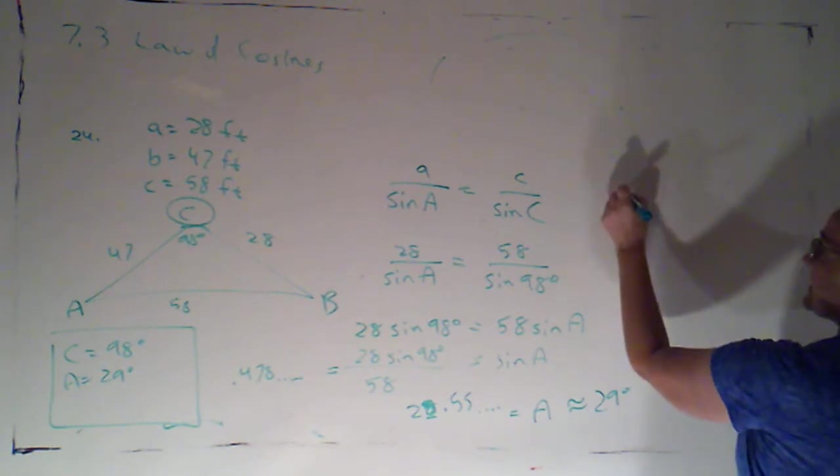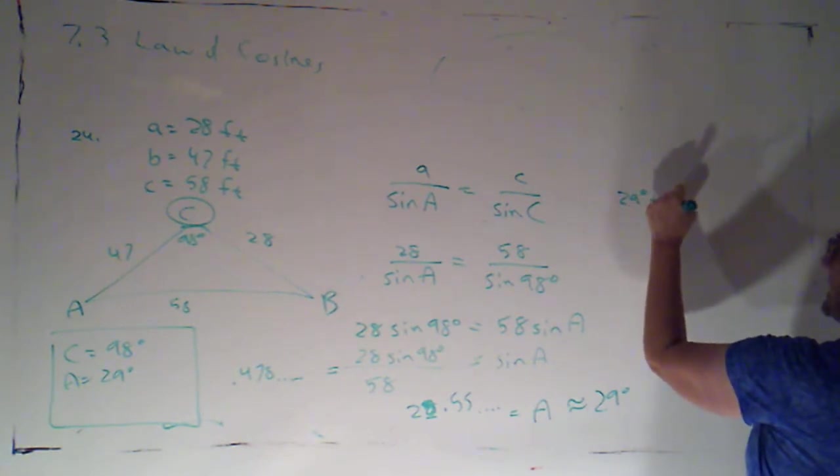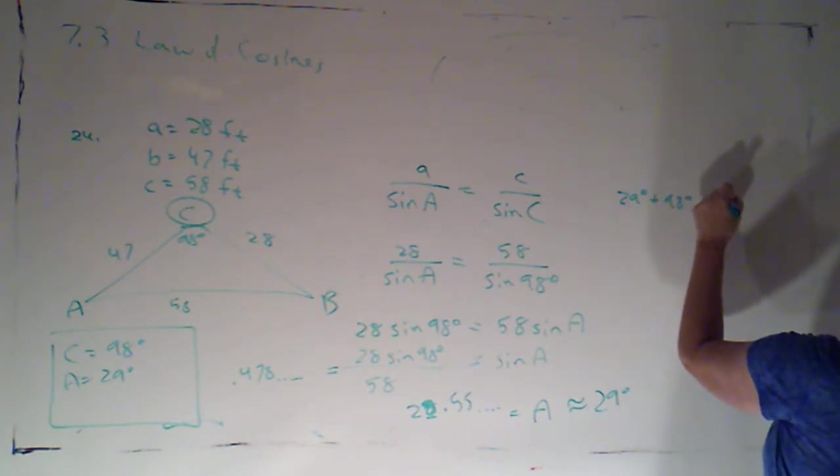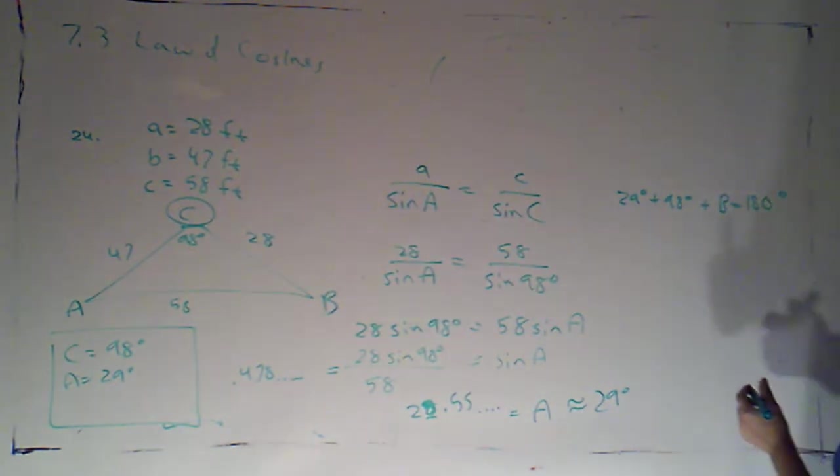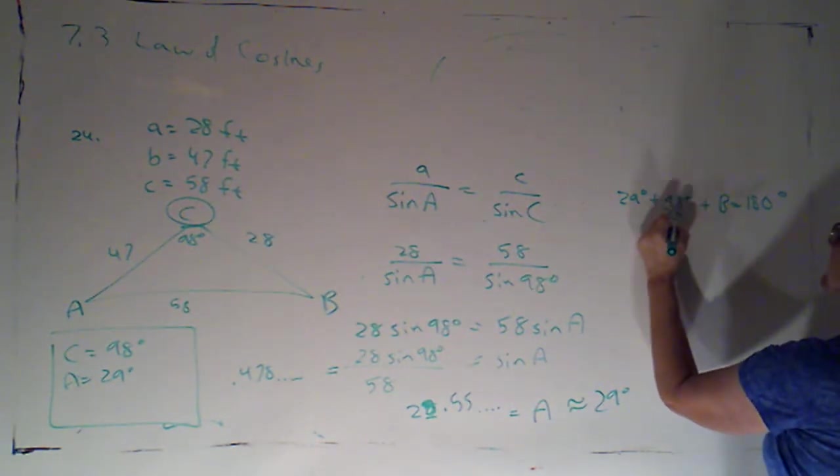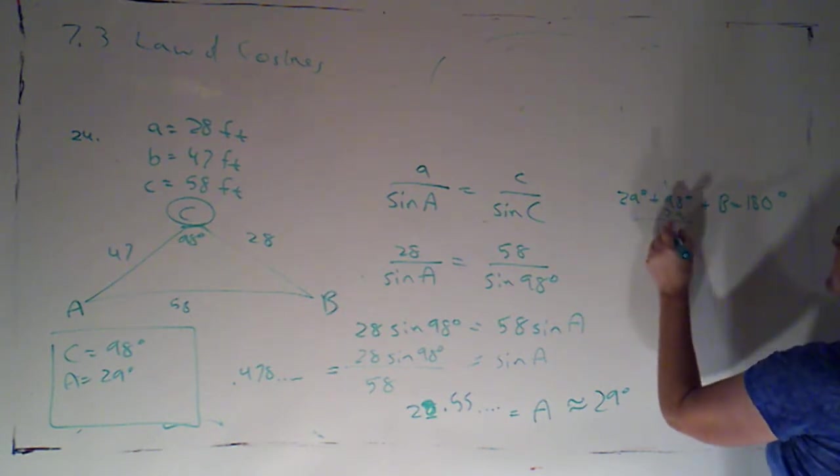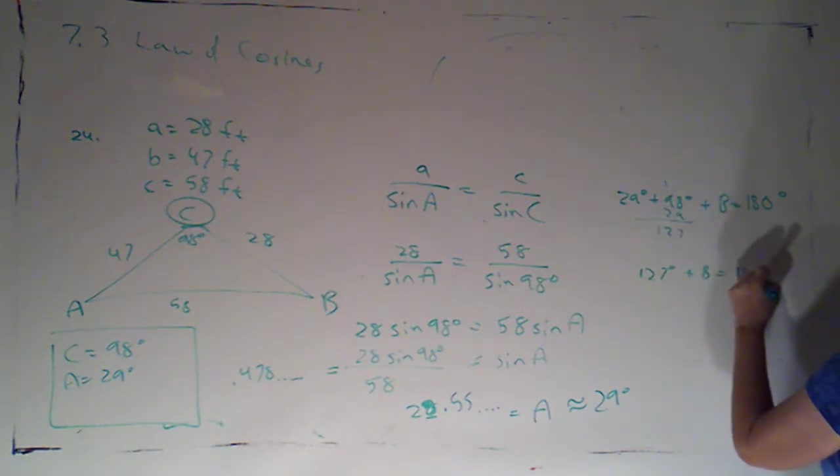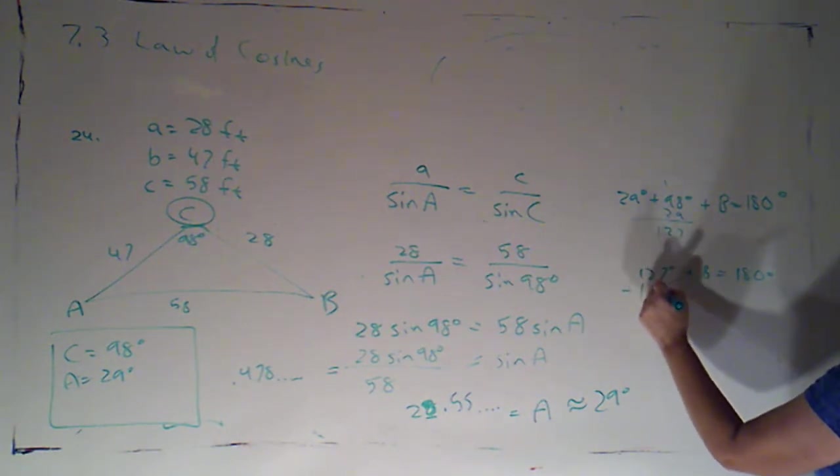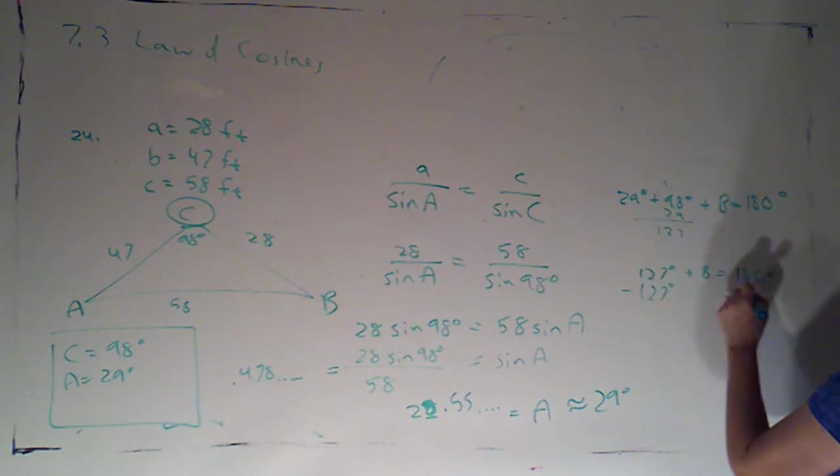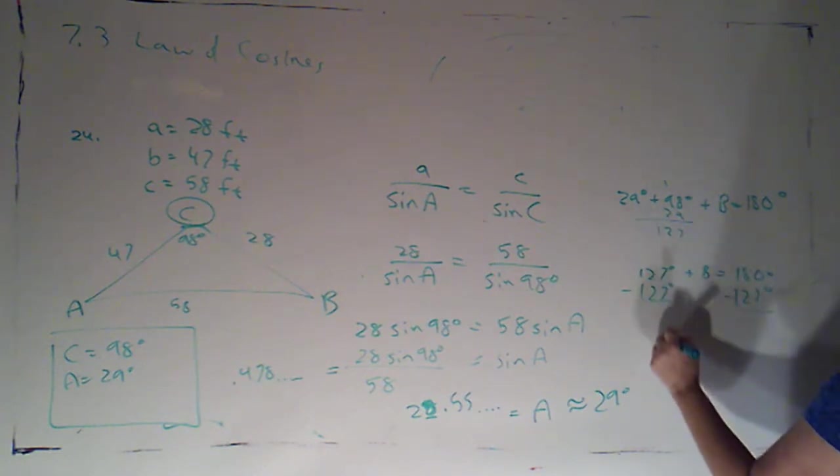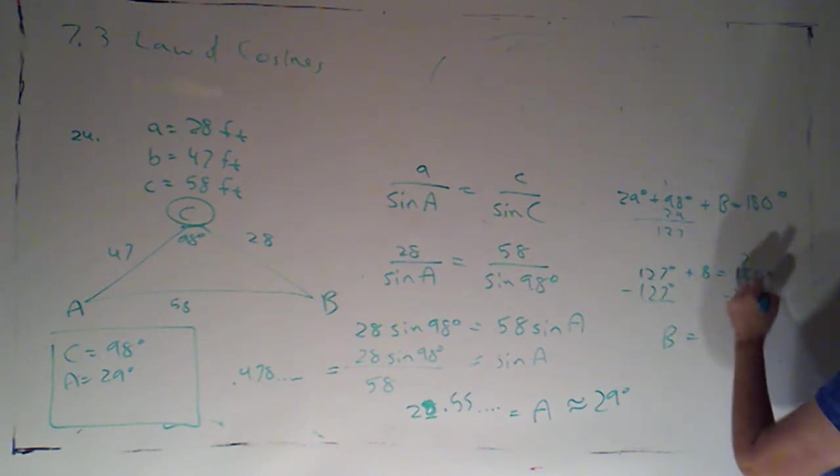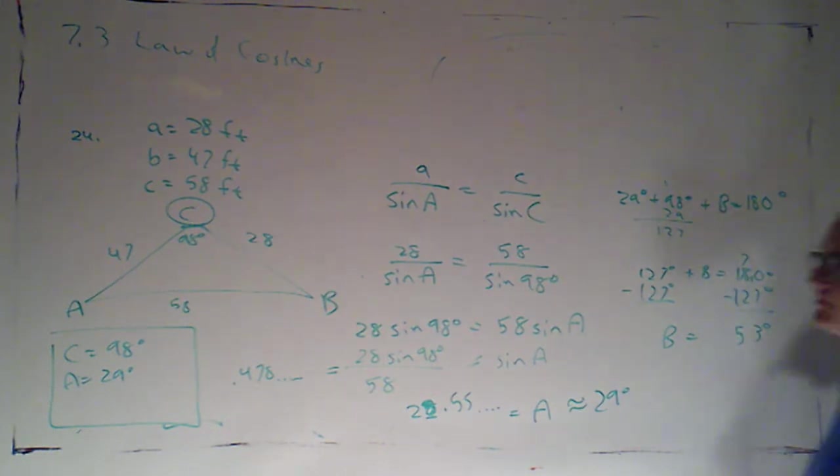But I'm just going to say 29 degrees plus 98 degrees plus B has to equal 180 degrees. Let's see what that is. That's 127 degrees plus B is 180 degrees. We'll subtract the 127. And so we get B is 53 degrees.